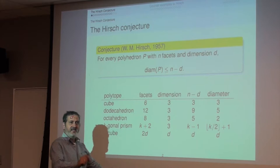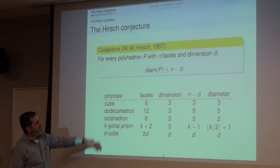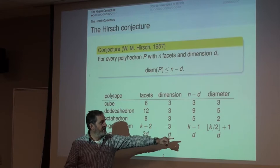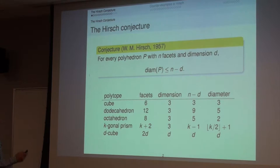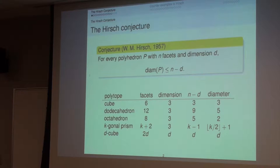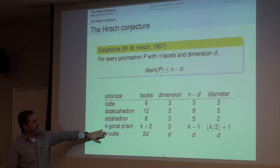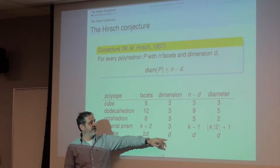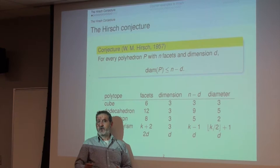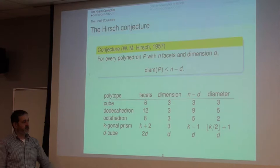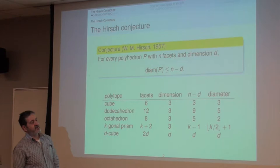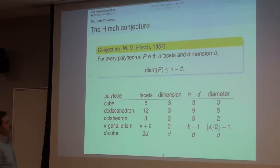Here's a table of some polyhedra you're all familiar with, together with the number of facets, dimension, n minus d, and diameter. We see that in all cases this inequality is satisfied, and actually in most cases with some slackness — except for example in the cube. In the d-dimensional cube we have exactly 2d facets, so n minus d equals d, and the diameter is also d, because you need one step along each coordinate direction to go from a vertex to the opposite. So the d-dimensional cube is an example where this bound is exactly met.